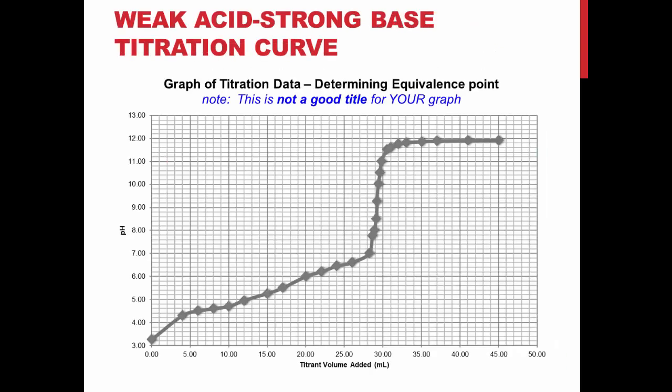In this experiment, you will be titrating a weak acid with a strong base. An example of what the titration curve from your experiment will look like is shown on the slide. Notice the almost linear region at the bottom of the curve. This is the buffer region. You will be looking at this in greater depth next week.